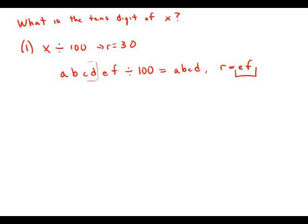And so that means that if x divided by 100 has a remainder of 30, that means x must have been of the form a bunch of other digits beforehand, and then the last two digits were 3 and 0. And so that means we would be able to determine the tens digit of x. The tens digit of x would have to be 3. So this statement by itself allows us to determine a unique answer to the question. So this statement by itself is sufficient.